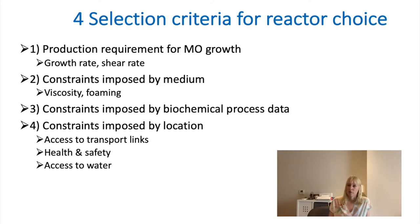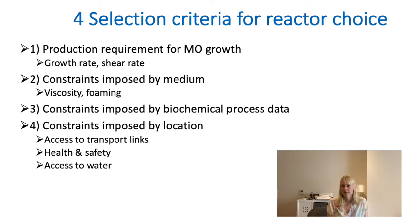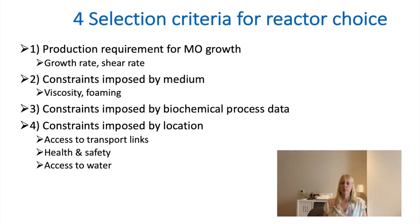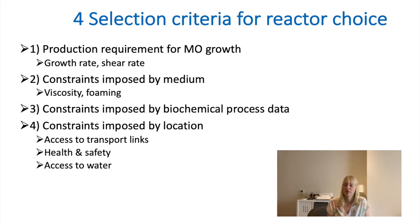A very important fourth criterion is location. What are the health and safety regulations where you are? How can you dispose of waste? What is the climate — would a humid, high-temperature environment be better or not? What is the availability of cooling water, since you need a lot of it and must be able to dispose of it appropriately? Also intrinsically linked to this is transport: is it easy to transport your product to its destination?